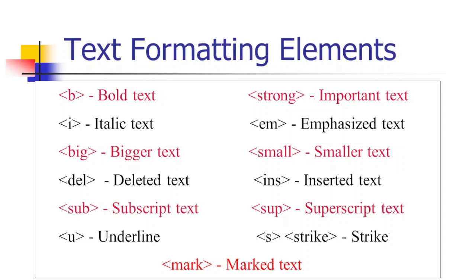Then you have underline and strike — words that are underlined or struck out. You can use the S element or the strike element. To mark or highlight a particular text, we use the mark element. All these elements are paired tags — for example, you open with B and close with slash B. For styling and presentation, you can use CSS.